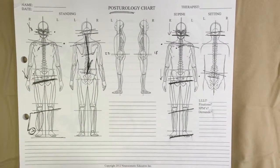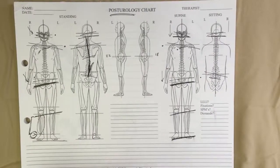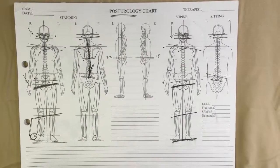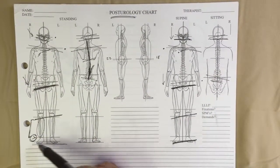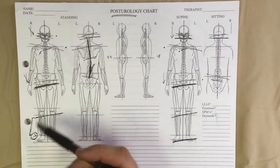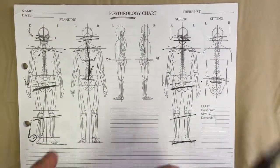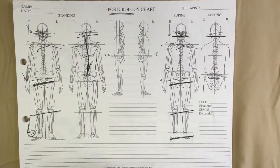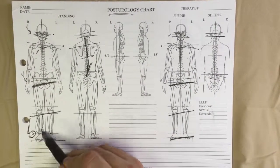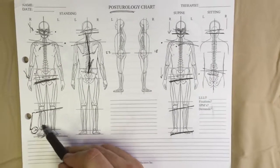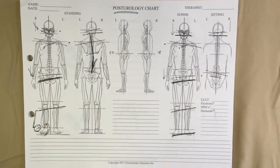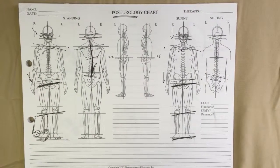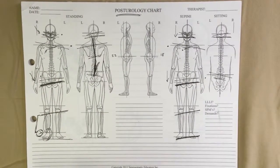If we do find out it is a leg length inequality, we can look at the measurement of that x-ray and determine how much of a difference there is. We also check out the arches — a fallen arch making that hip drop can look like a leg length inequality. It becomes really important to have somebody you can refer to, or recommend that they go get an arch support for their foot. This is valuable information that can really help your clients out and help solve their problems.